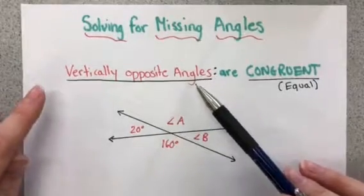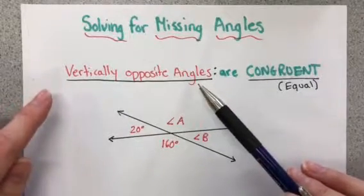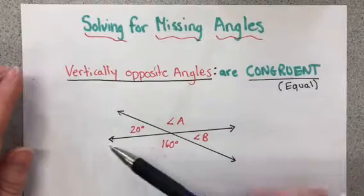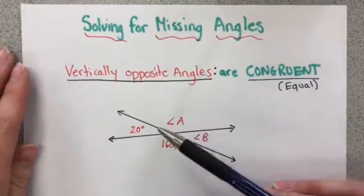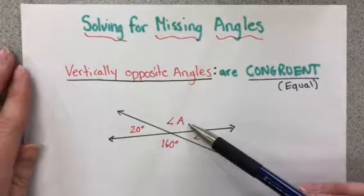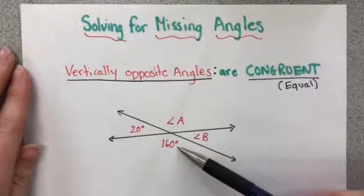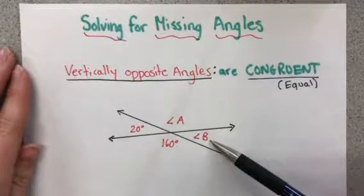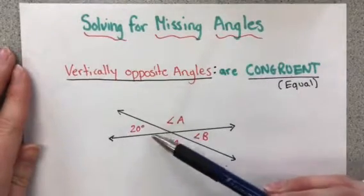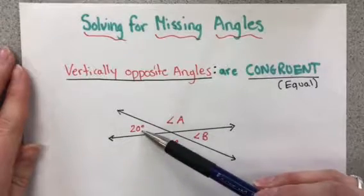Vertically opposite angles are formed when two lines intersect one another. For example, this angle A here would be vertically opposite to this angle here, and B would be vertically opposite with the angle on this side, the 20 degrees.